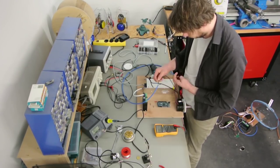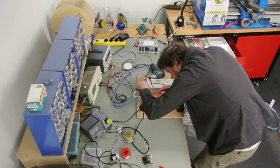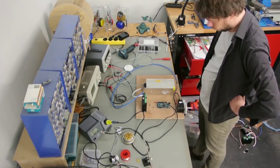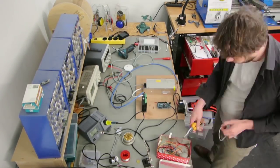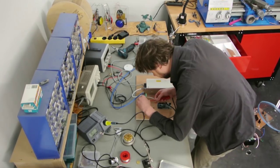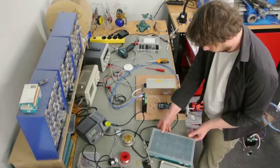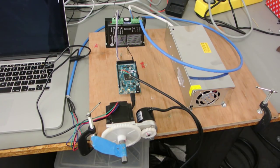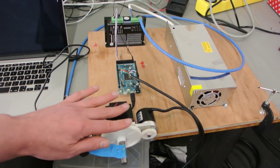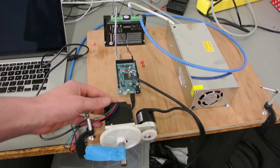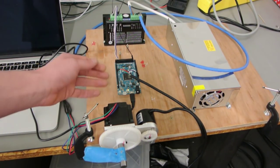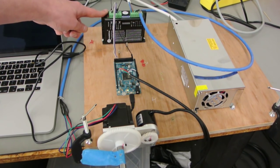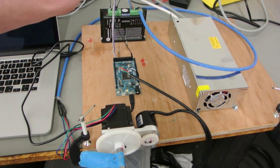Now I was ready to wire everything together. So here you can see the test setup. I got the rotary encoder connected to the motor. I got my Arduino Due, my stepper motor driver, my power supply and my computer.